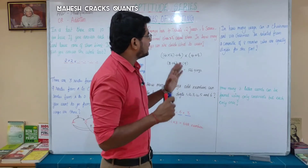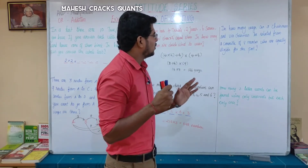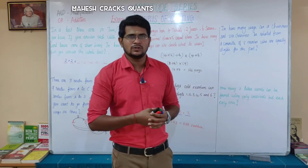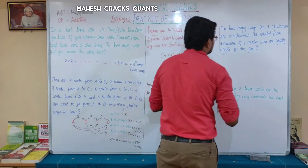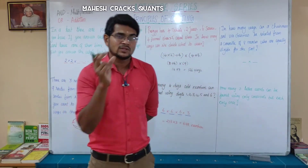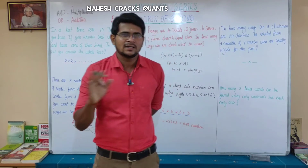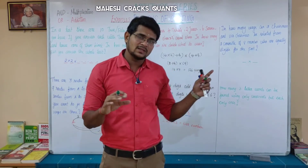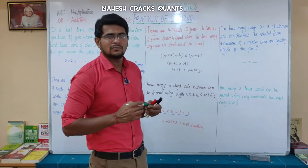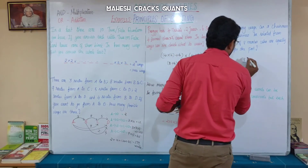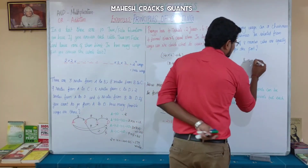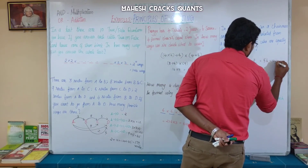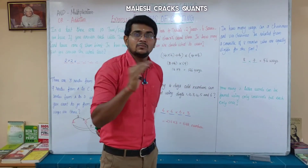In how many ways can a chairman and vice chairman be selected from a committee of eight members who are equally eligible for the post? You choose two positions: chairman and vice chairman. For chairman, you have 8 choices. Once the chairman is chosen, the vice chairman is chosen from the remaining members. So the total number of ways is 8 × 7 = 56.